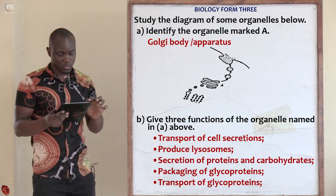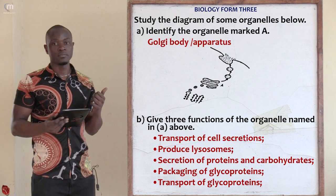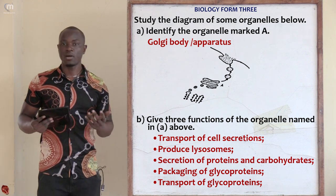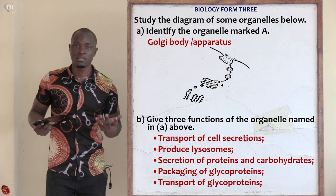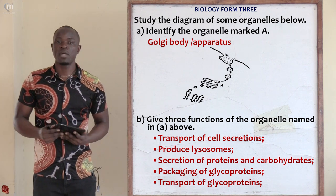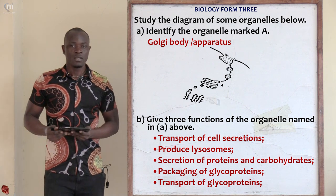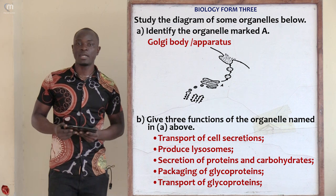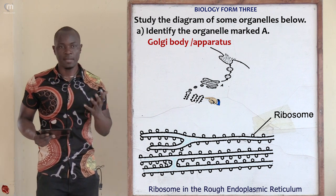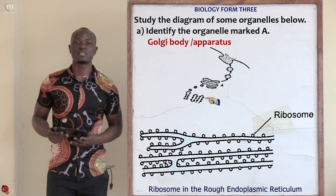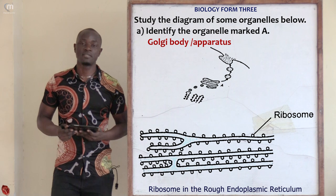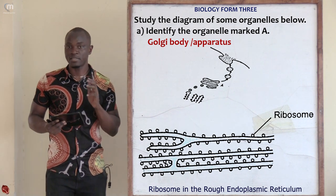Let's go to question number five. The question asks us to study the diagram of some organelle below. Since we know these are organelles, let's assess the diagram to identify them. For the diagram on the lower part, you can see an organelle with very small black dots. The only organelle in a plant or animal cell with these small dots on the exterior is the rough endoplasmic reticulum.